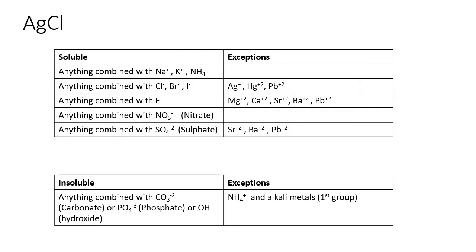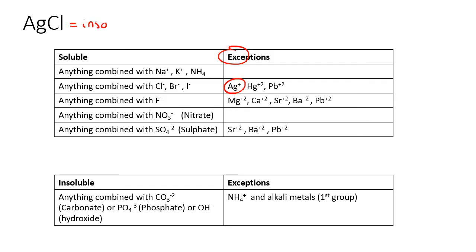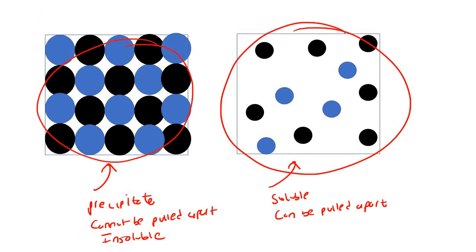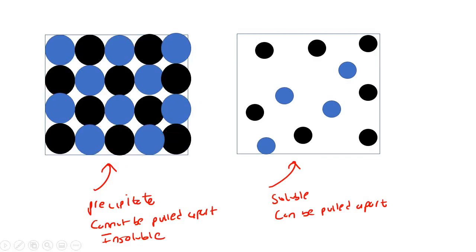For AgCl: the table says anything combined with Cl⁻ is soluble, except if it's Ag⁺. We have Ag here, so that means AgCl is insoluble. It cannot be pulled apart into individual ions, so it forms a precipitate.